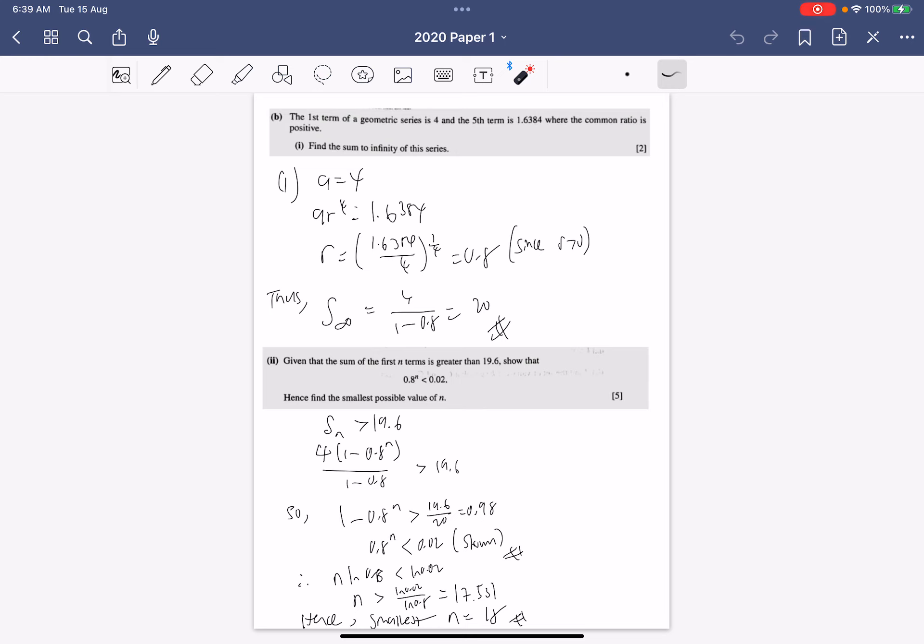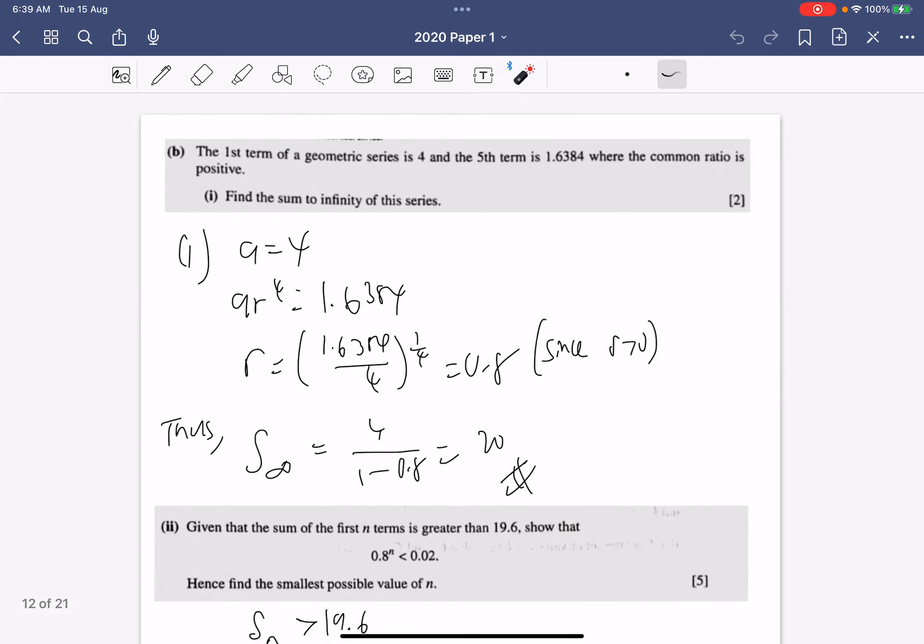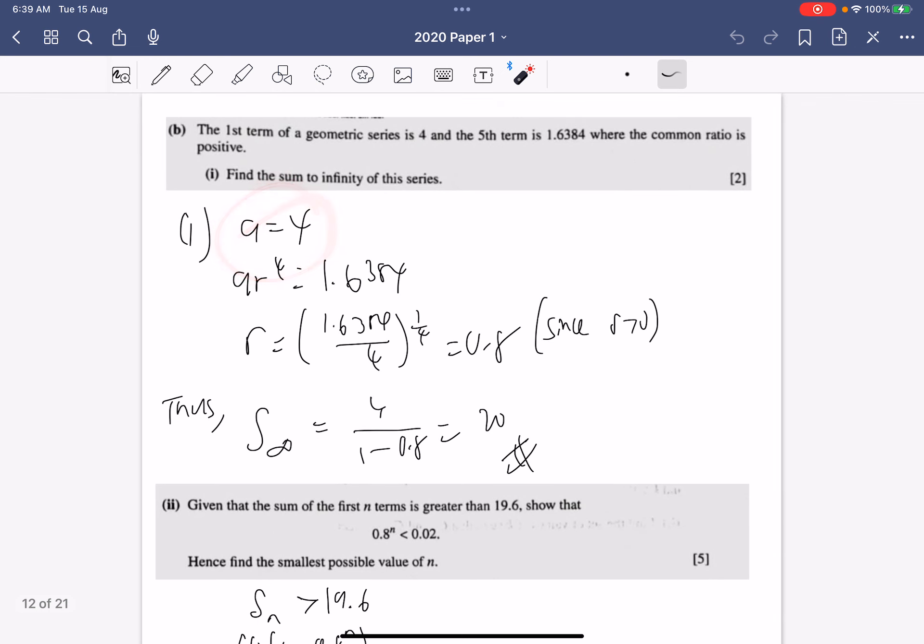Now the first term of the geometric series is 4 and the fifth term is 1.6384. So again we just mean the first term is 4, and the fifth term which is a times r to the power 4 since it's geometric is 1.6384. So r is taking this divided by 4 then you take the 1 over 4 root, so that equals to 0.8 since r has to be positive.